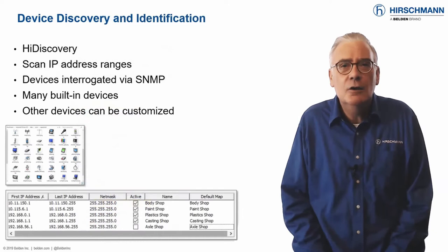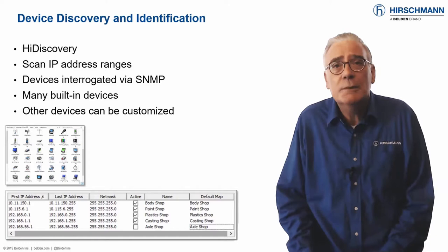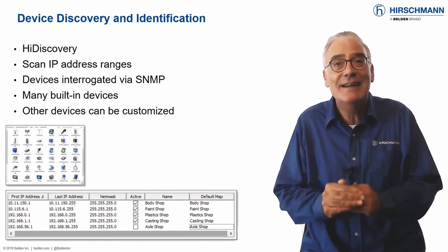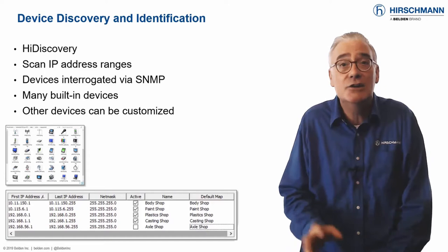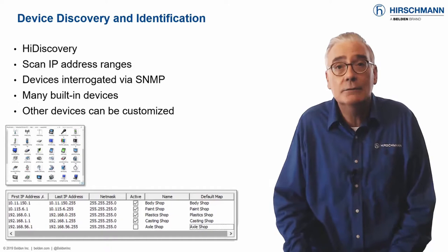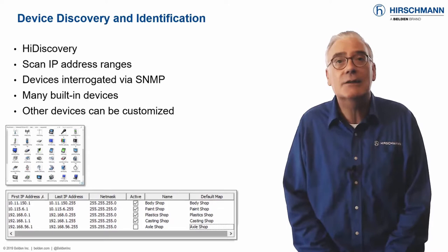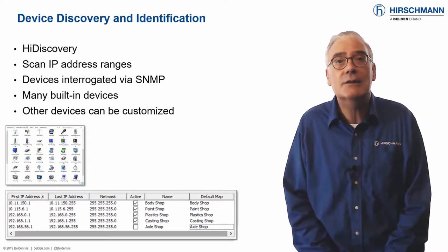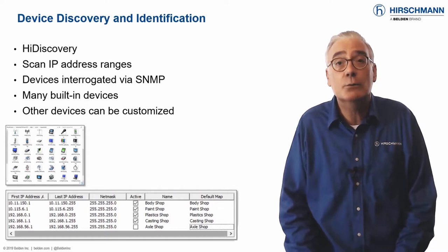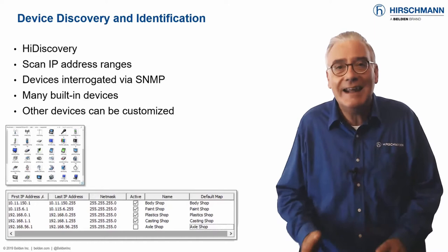For all but the smallest networks, you need an effortless way to discover and identify the devices which should be monitored. For Hirschmann devices, the HiDiscovery function can discover devices even when they do not have an IP address. Assigning an IP address is then just a couple of clicks. Industrial HiVision also allows you to scan multiple IP address ranges and display the discovered devices. Device types are then identified using SNMP. Templates for many devices are already included in Industrial HiVision, ensuring that each device is accurately represented in the software. If a template for your device is not present, the included HiFusion application will help you to create a template which exactly matches your requirements. We will look at HiFusion later in this video series.